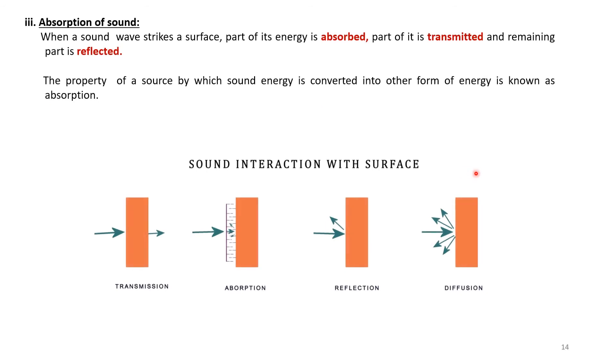There is a formula to calculate the reverberation time of any room. Sound waves can be transmitted through material, absorbed by material, reflected, or diffused. When a sound wave strikes a surface, part of the energy is absorbed, part is transmitted, and the remaining part is reflected. The property of a surface by which sound energy is converted into other forms of energy is known as absorption.